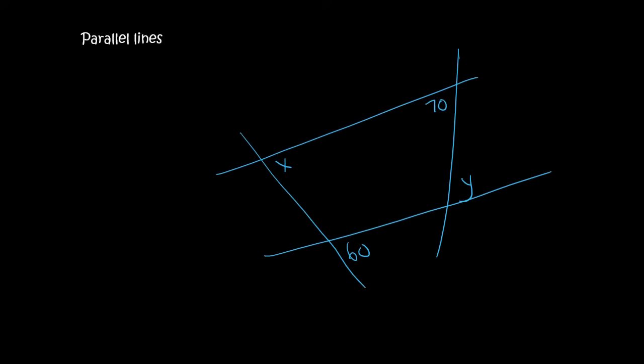All right, so here we're going to look for X and for Y. I must say that these lines are parallel. Well, okay, so if we look at the X and the 60, well, that shape is an F. So X would be 60. I'm not worrying about the reasons just yet. I'm just getting you guys into the hang of this, or into the swing of things.